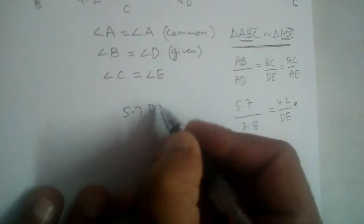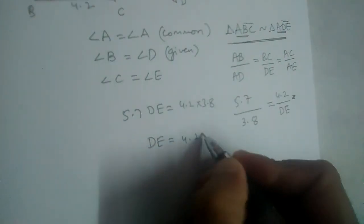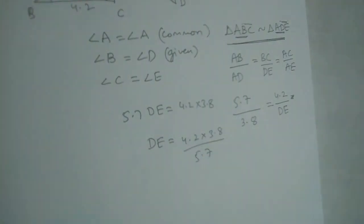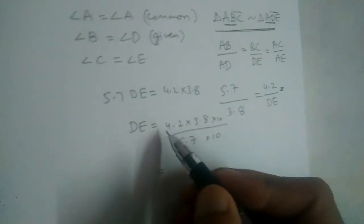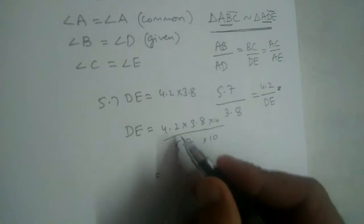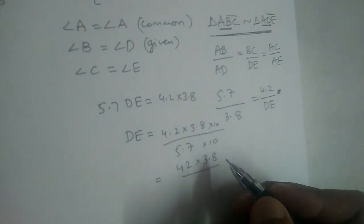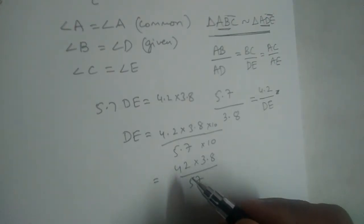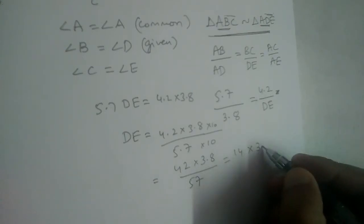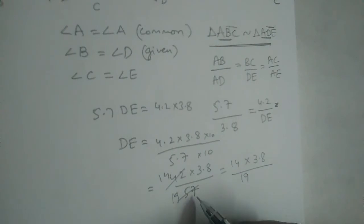If we cross multiply, we get 5.7 × DE = 4.2 × 3.8. So DE equals 4.2 × 3.8 divided by 5.7. Let us multiply numerator and denominator by 10 to eliminate the decimal point: that gives 42 × 3.8 divided by 57. Cancelling with the 3 times table: 57 ÷ 3 = 19 and 42 ÷ 3 = 14. So we have 14 × 3.8 divided by 19.